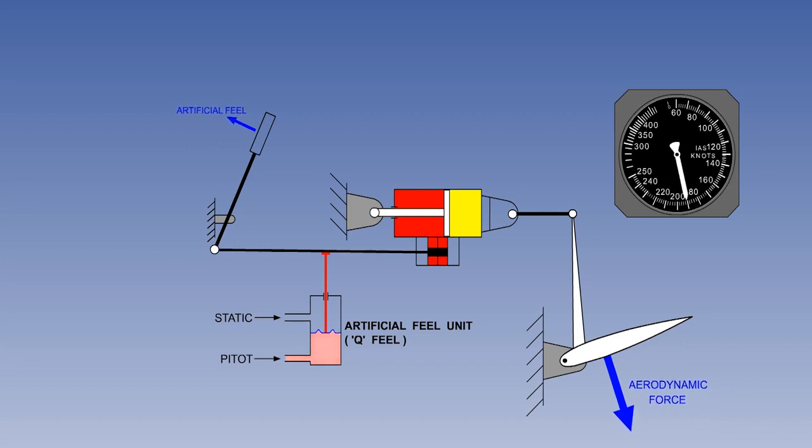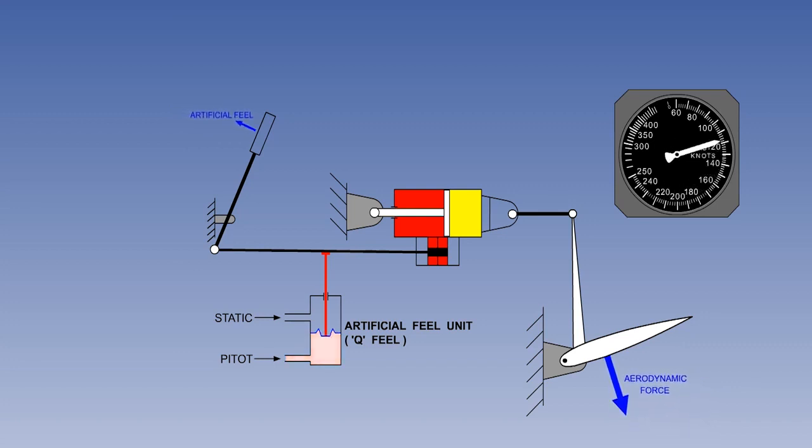As before, these illustrations are schematic to show the operating principle. If hydraulic pressure to fully powered flying controls were lost, the aircraft would become uncontrollable. So some alternative means of control must be provided to guarantee safe flight.